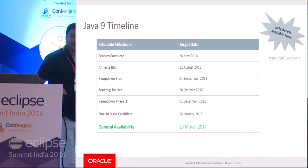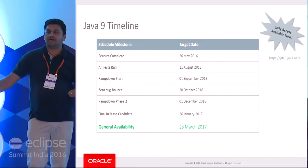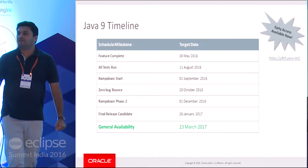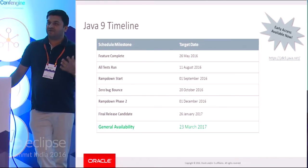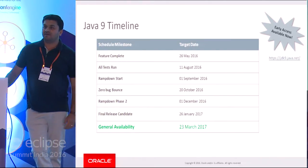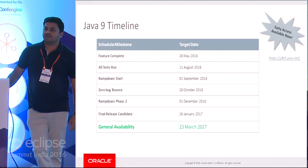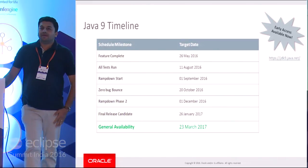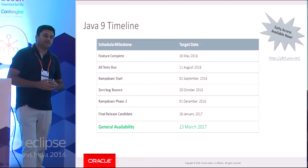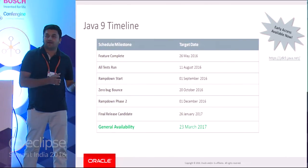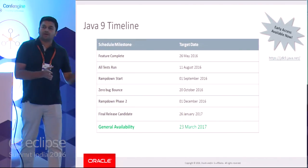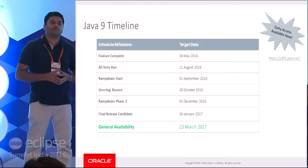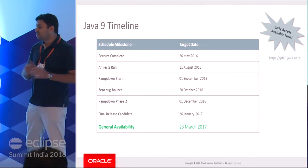Can we have a quick show of hands — how many of you have already tried Java 9 early access? As you said, it has already broken some pieces, because there may be certain code which you shouldn't have done. For example, if you're using an internal API, it used to run with warnings until Java 8, but with Java 9 it won't run with a warning — it will just break. So you should know all those things.